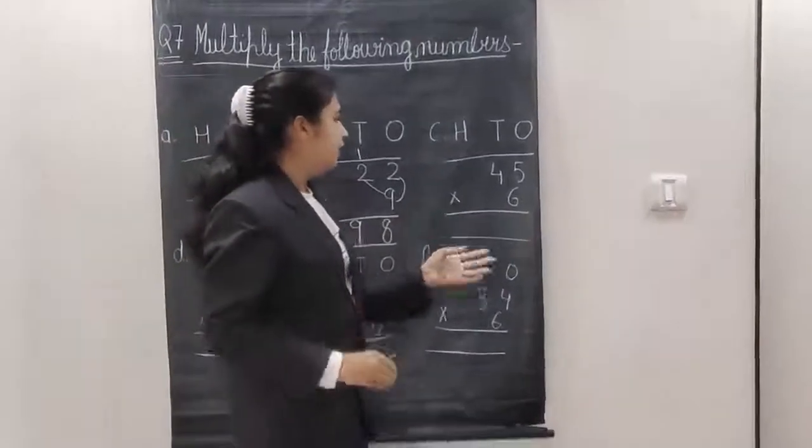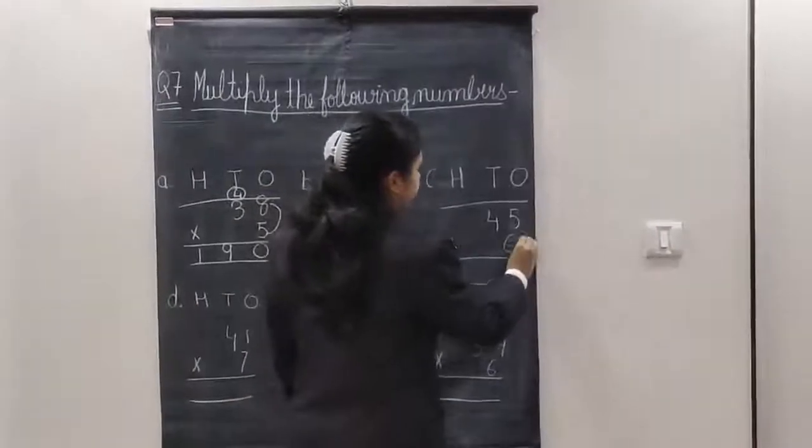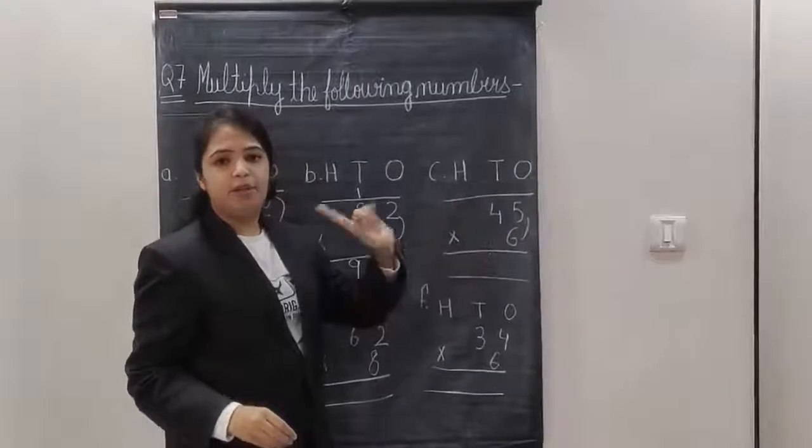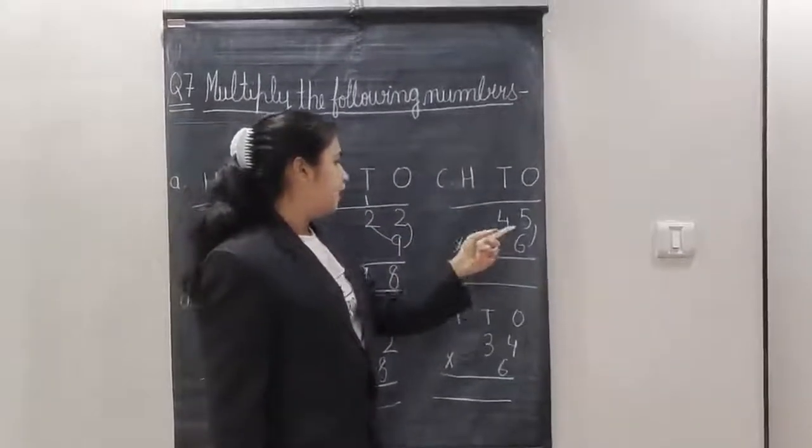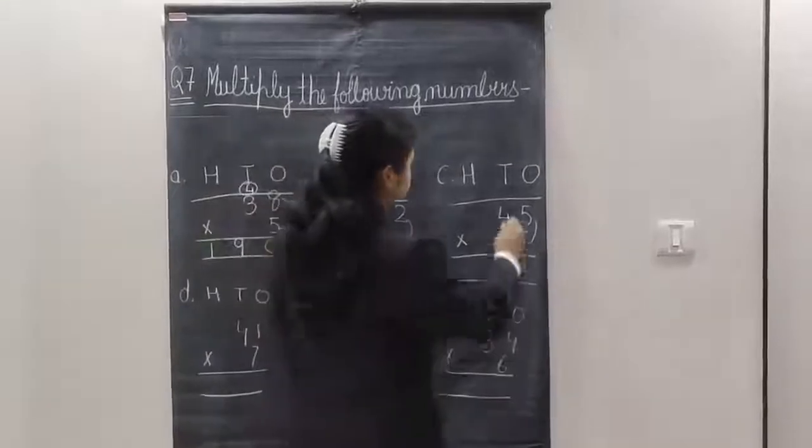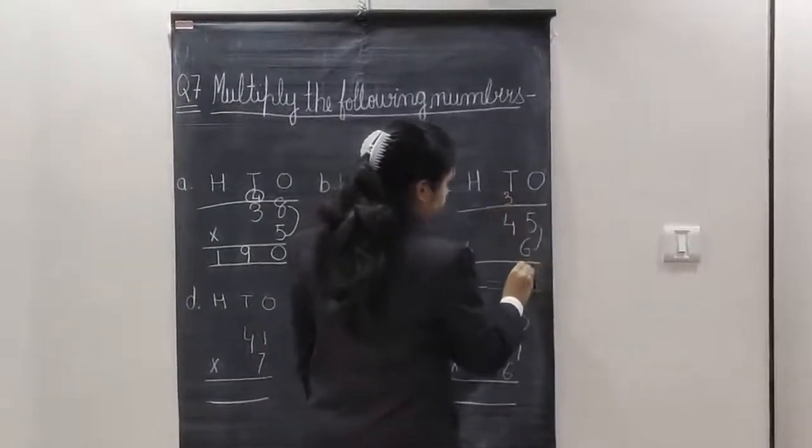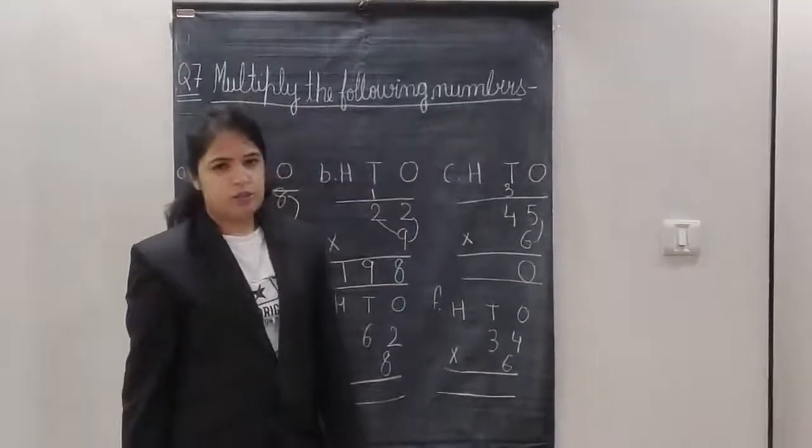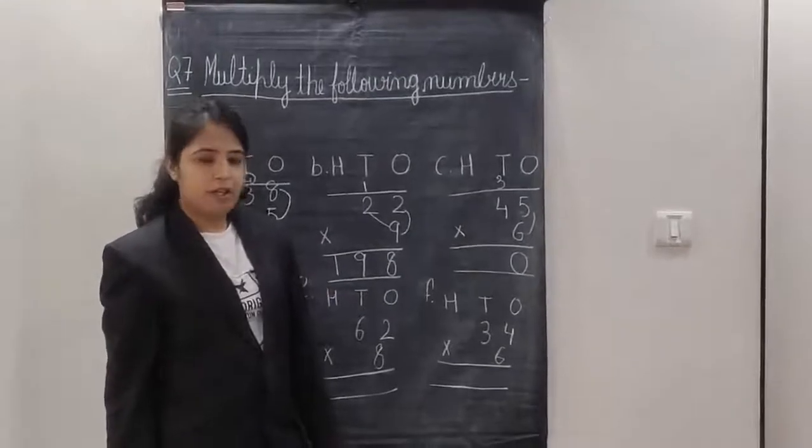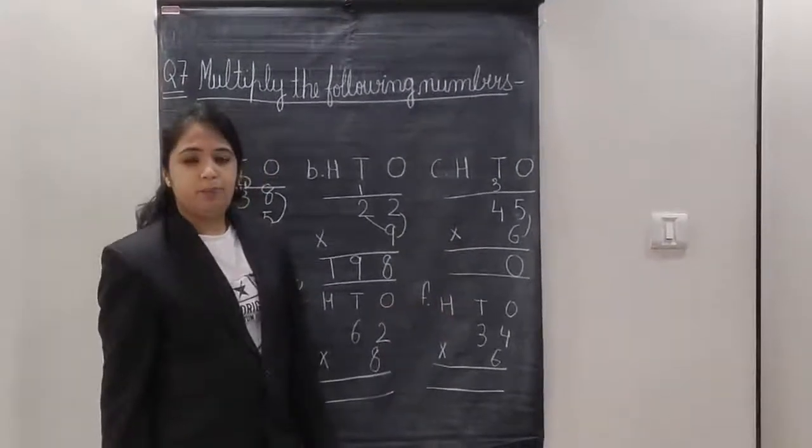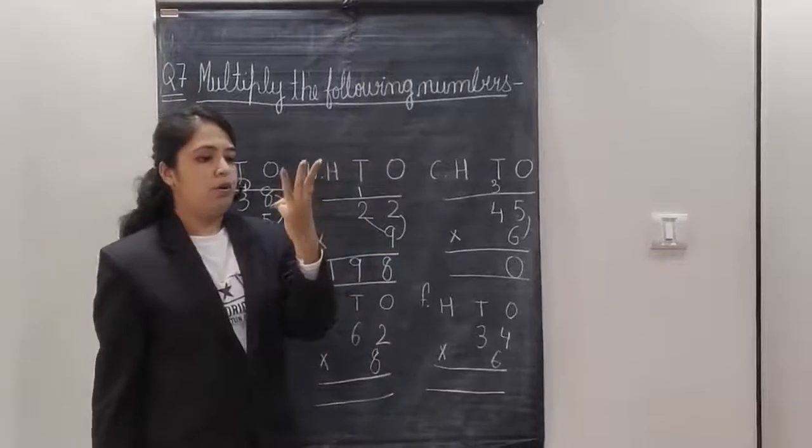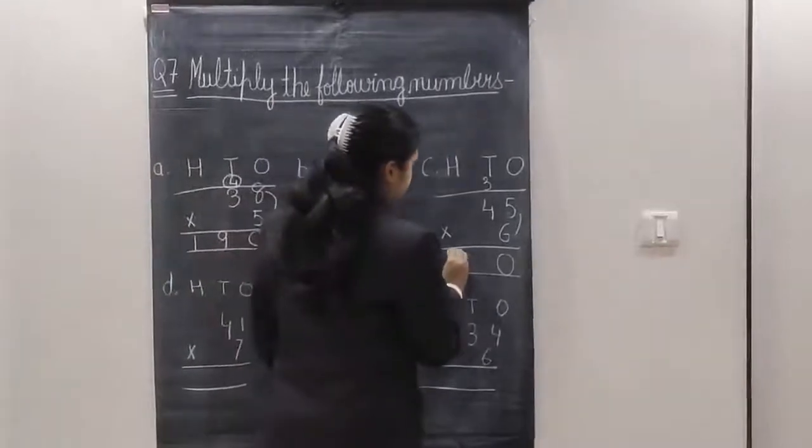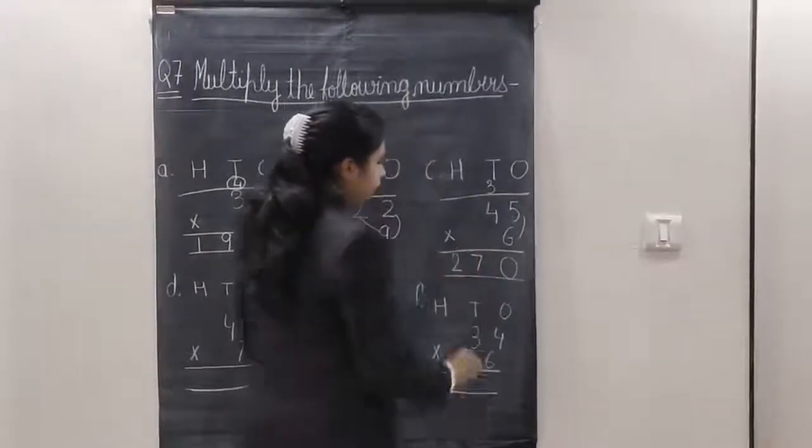Now, moving to the C sum. 6 fives are. First, we will do. Then, we will do 6 fours are. We have to multiply with both the numbers. 6 fives are 30. 3 up, 0 down. 6 fours are, or you can do 4 sixes also. The answer will be same. 6 fours are 24. 24 and 3, plus 3. 24, 25, 26 and 27. So, here the answer is 270.